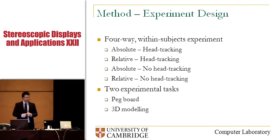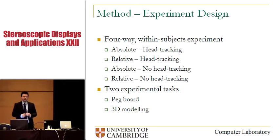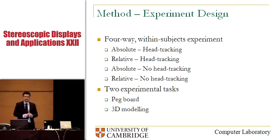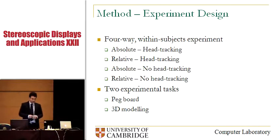In order to compare relative and absolute interaction, as well as the effect of head tracking on 3D interaction, we designed a four-way within-subjects experiment. The four configurations were made out of combinations between absolute versus relative and head tracking versus no head tracking. We used two experimental tasks: a pegboard task and a simple 3D modeling task.